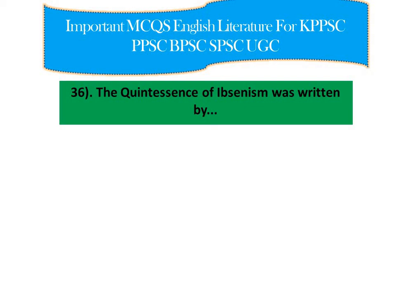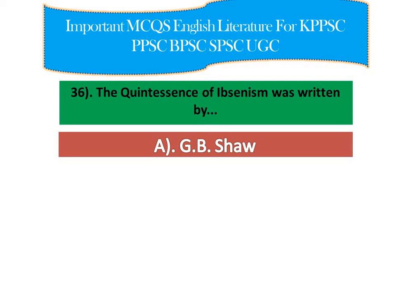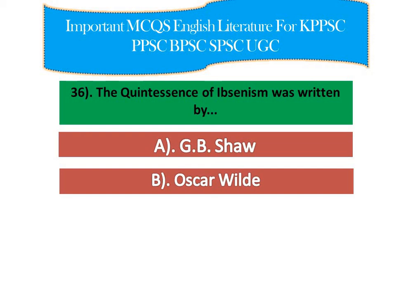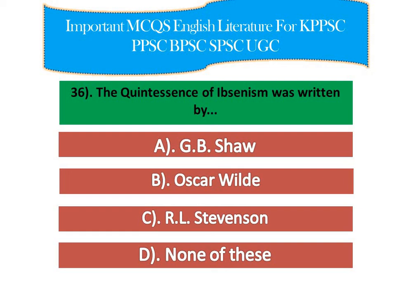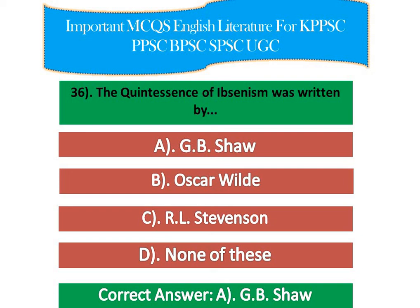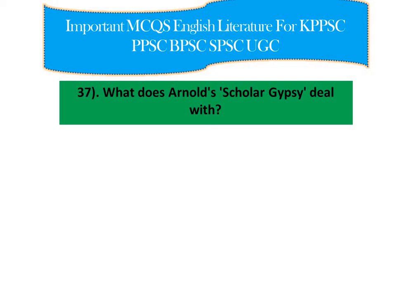Question number 11: 'The Quintessence of Ibsenism' was written by — option A: George Bernard Shaw, option B: Oscar Wilde, option C: R.L. Stevenson, option D: none of these. The right answer is option A — George Bernard Shaw. 'The Quintessence of Ibsenism' is an essay written in 1891 by George Bernard Shaw, providing an extended analysis of the work of Norwegian playwright Henrik Ibsen.